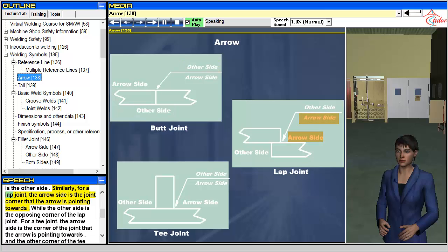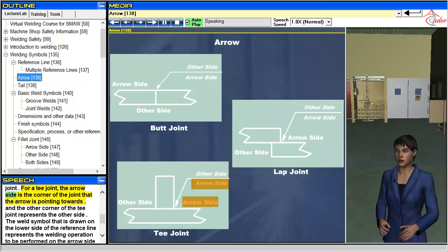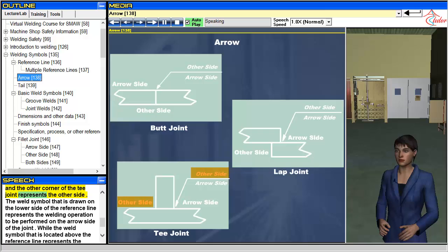Similarly, for a lap joint, the arrow side is the joint corner that the arrow is pointing towards. And the other corner of the T joint represents the other side.